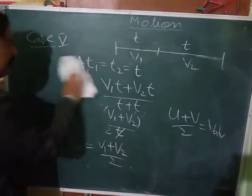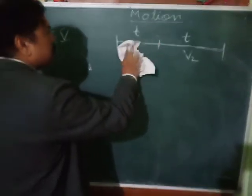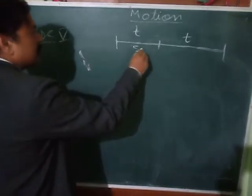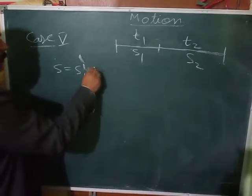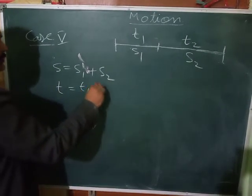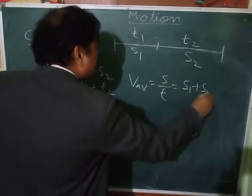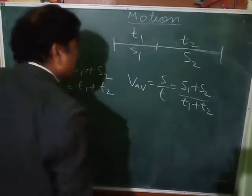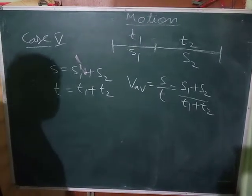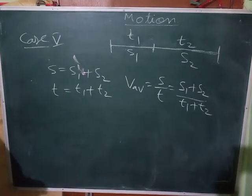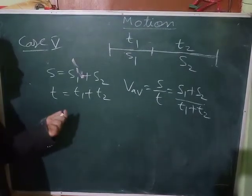Case 5 is the most straightforward case. If a body covers S1 distance in time T1 and S2 distance in time T2, then total distance is S1 + S2 and total time is T1 + T2. So average speed = (S1 + S2) / (T1 + T2). This is just the basic definition of average speed.